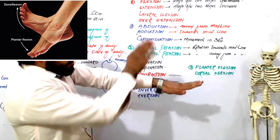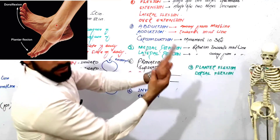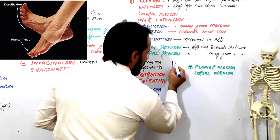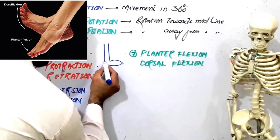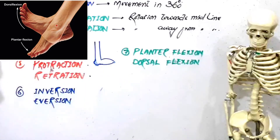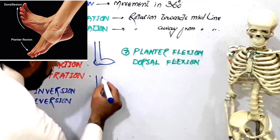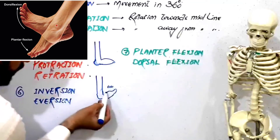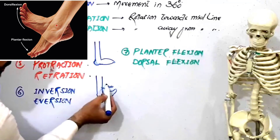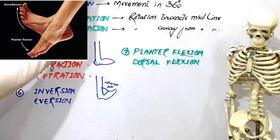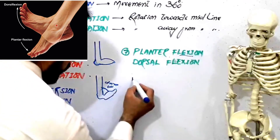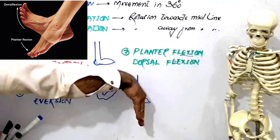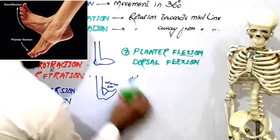This is your foot, and here is your tibia and fibula. If you are performing this movement, it is called dorsal flexion; if you perform this movement, it is called plantar flexion. Looking at the diagram — tibia, fibula, and dorsum of the foot — when you do this movement, the angle between the tibia and the dorsal surface decreases, so it's called dorsiflexion. When you move back like this, this is called plantar flexion.